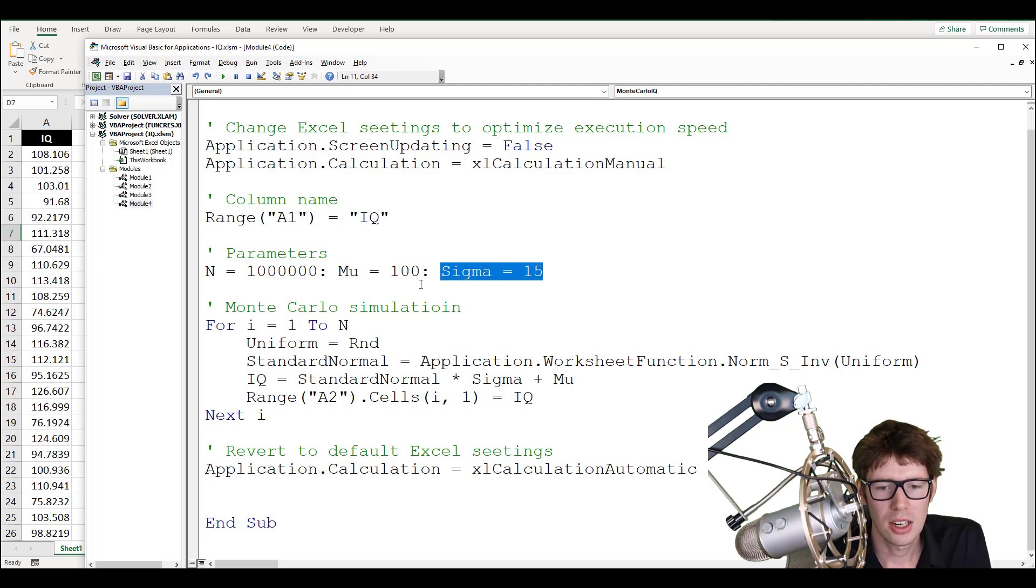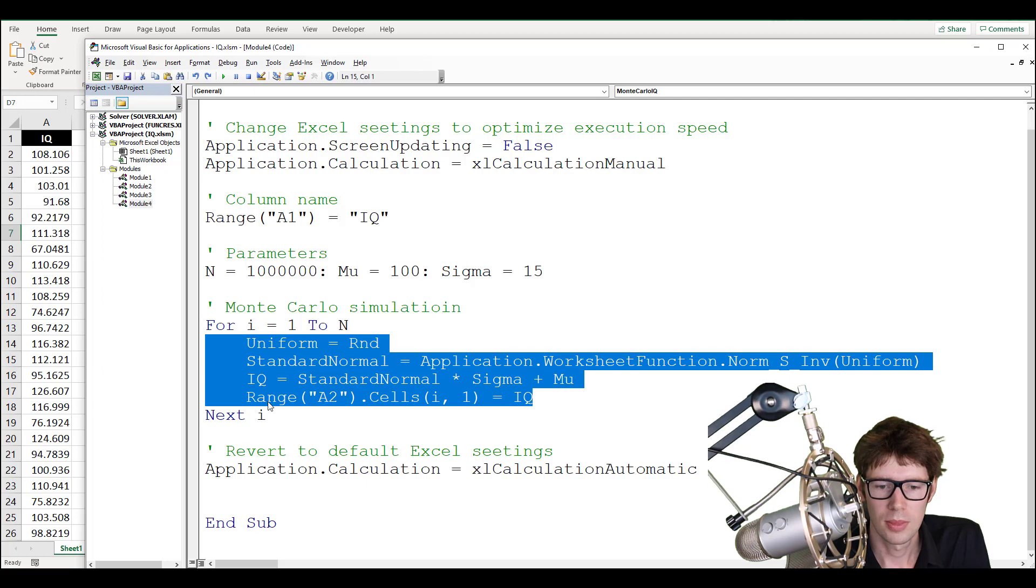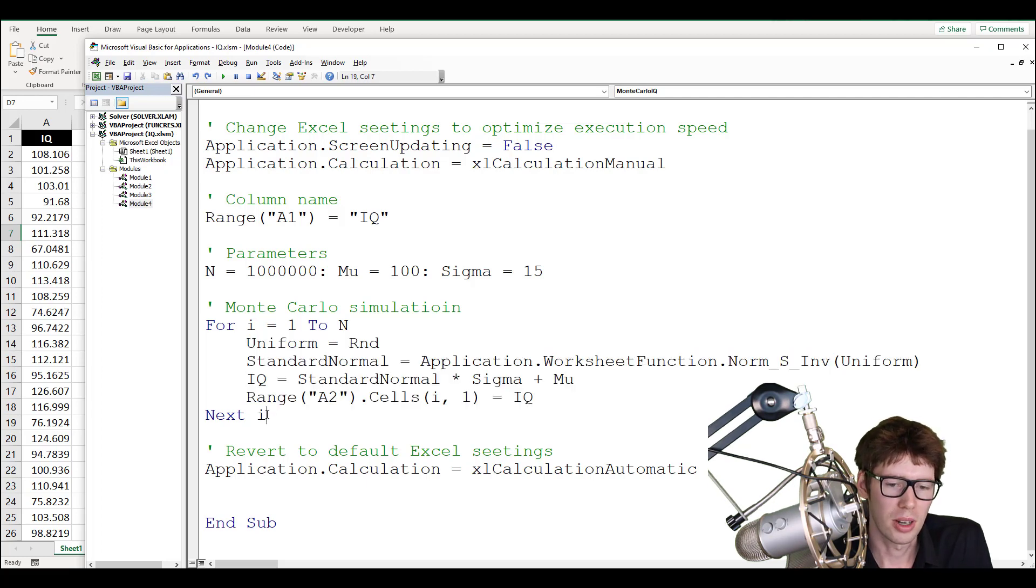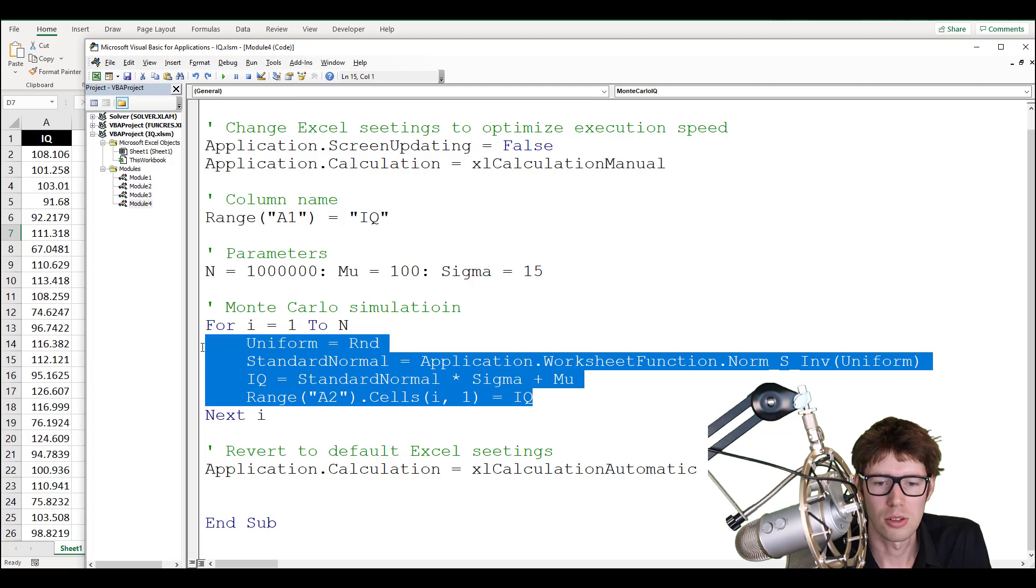Then we get to the actual Monte Carlo simulation. For that, we're using a for loop. So for i equals one to n, and n is specified up here as one million, we are going to do something. And then to end this for loop, we just write next i. So whatever is between for i equals one to n and next i, that will be repeated n number of times.